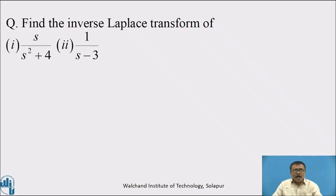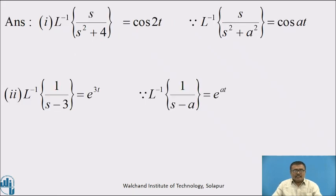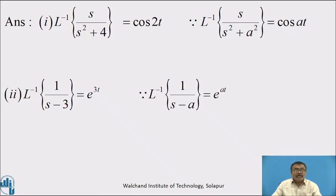Pause the video and answer the question. Find the inverse Laplace transform of: (1) s/(s²+4), and (2) 1/(s−3). Answer: L⁻¹{s/(s²+4)} = cos 2t, because L⁻¹{s/(s²+a²)} = cos at. And L⁻¹{1/(s−3)} = e^(3t), because L⁻¹{1/(s−a)} = e^(at). Here a = 3.